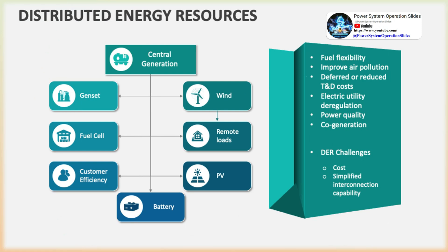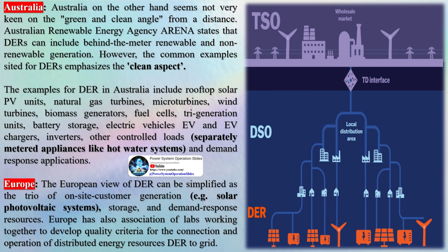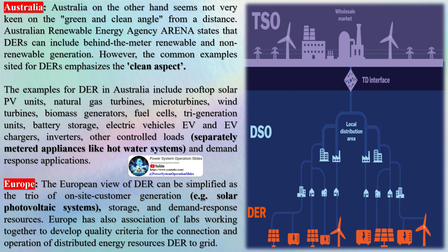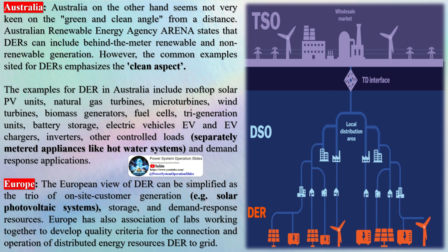In Canada, the Independent Energy System Operator (IESO) understands DER as clean energy resources located within the distribution system. The Canadian definition allows solar panels, combined heat and power plants, electricity storage, small natural gas fuel generators, electric vehicles, and controllable loads such as HVAC systems and electric water heaters to constitute DER. Australia, on the other hand, seems less focused on the green-and-clean angle. The Australian Renewable Energy Agency (Arena) states that DERs can include behind-the-meter renewable and non-renewable generation, though common examples cited still emphasize the clean aspect.